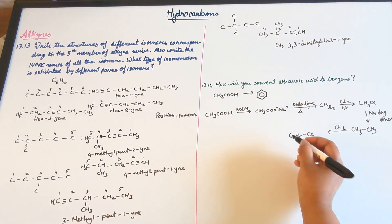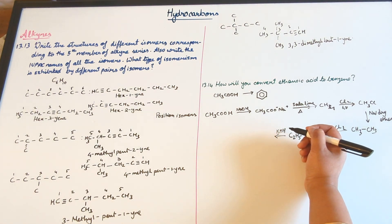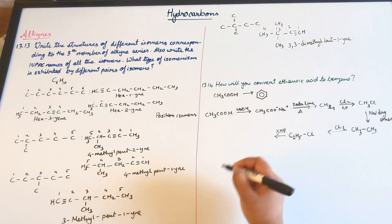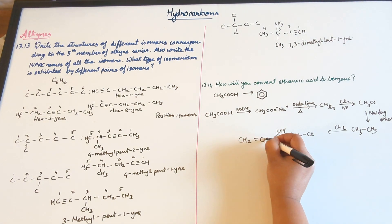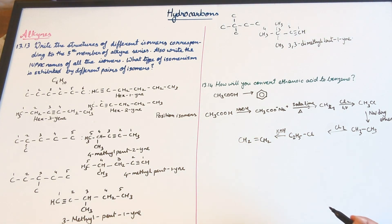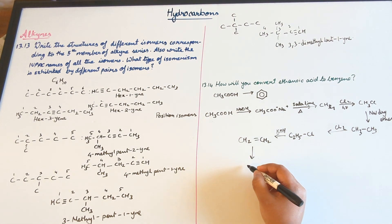Now this is undergoing again a reaction with KOH potassium hydroxide to form an alkene. So we're converting from an alkane to alkene to alkyne.